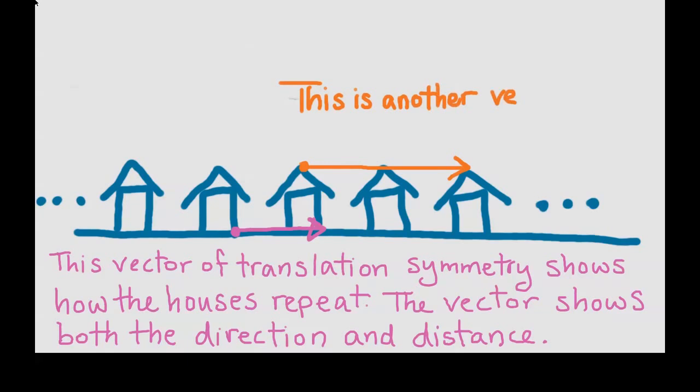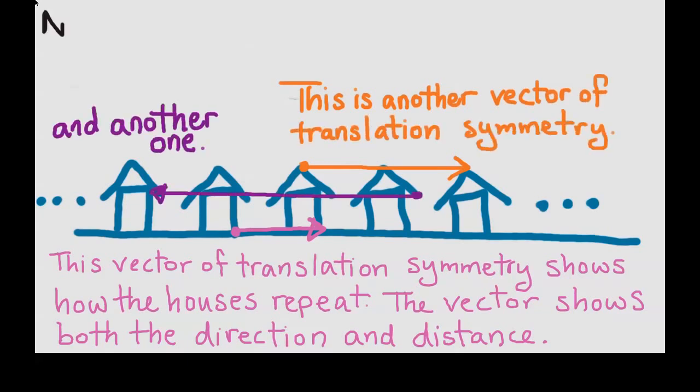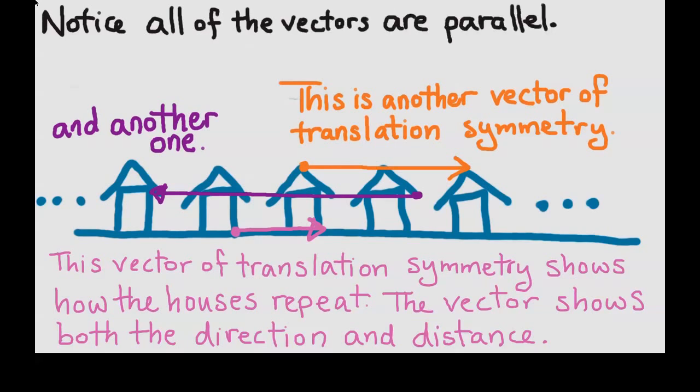This is another vector of translation symmetry. And here's another one. In fact, there's an infinite number of these. But all of the vectors are parallel to each other.